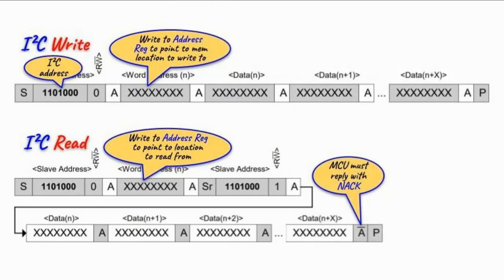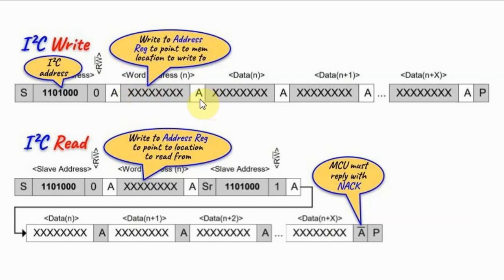The microcontroller communicates with the DS1307 using I2C protocol. For a write operation: the microcontroller sends a start pulse, then the DS1307 I2C address with logic 0 to indicate write. The DS1307 acknowledges, then the microcontroller sends a byte to program the address register, pointing to the desired RAM location. The DS1307 acknowledges again, the microcontroller sends the time and date bytes, each acknowledged by the DS1307, and finally ends with a stop pulse.